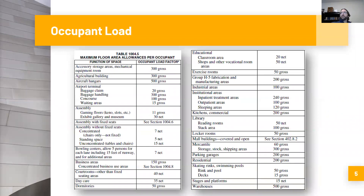When we look at Table 1004.5, we have the maximum floor area allowances per occupant. When you design a building or space, you'll divide the area of the building by these occupant load factors, and that will give you your total number of occupants. What you see in this table is that occupant load factors are all either calculated as a gross area factor or a net area factor — every occupant load factor is either gross or net.